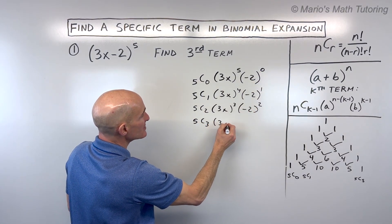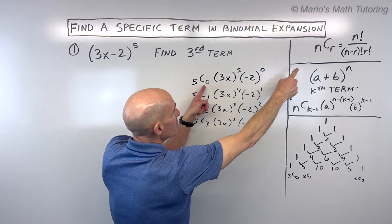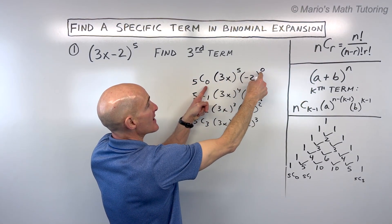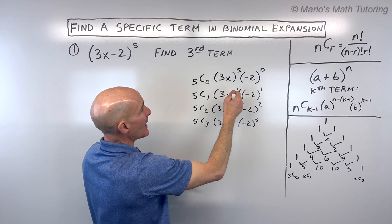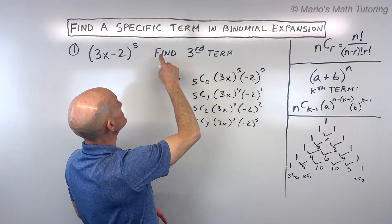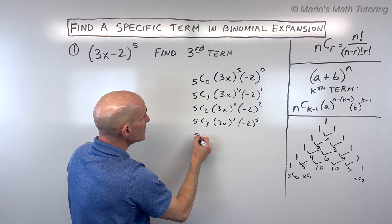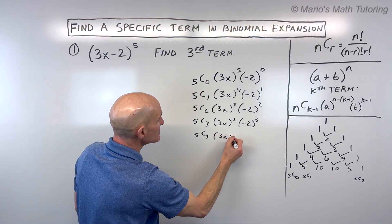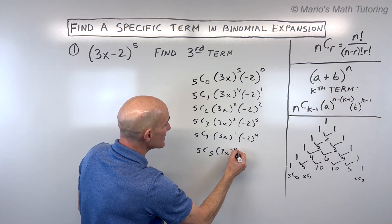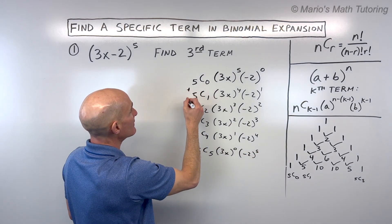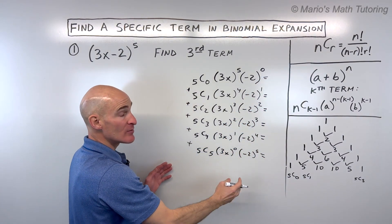There's an important pattern here: the r value in nCr and the second term's exponent always match — 0 and 0, 1 and 1, 2 and 2, 3 and 3. Also, the two exponents add up to five: 5+0, 4+1, 3+2. Continuing: 5C4 gives 3x to the first and negative 2 to the fourth; 5C5 gives 3x to the zero and negative 2 to the fifth. All terms are added together, then you simplify.